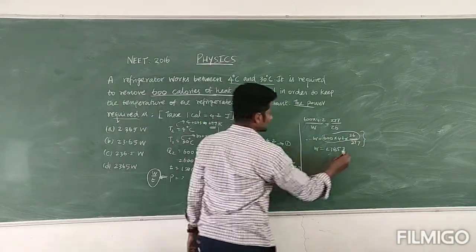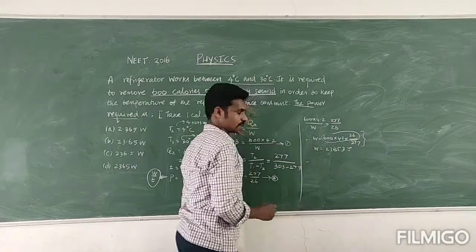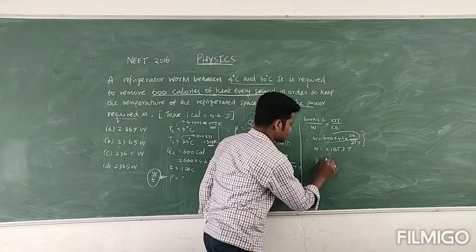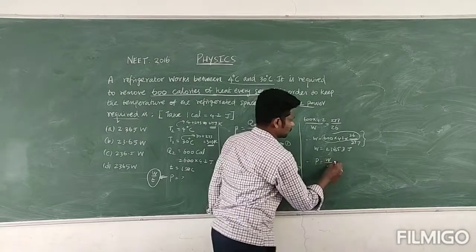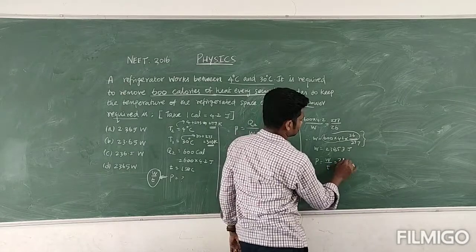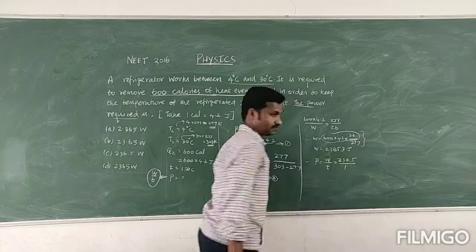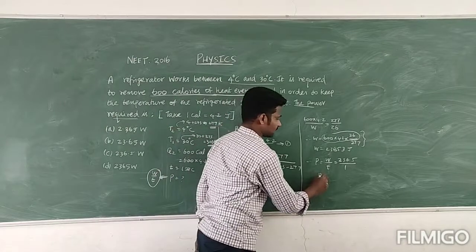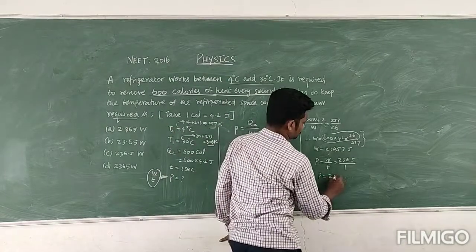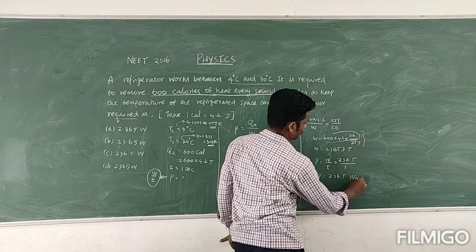But now they are asking the power. So power value we can write, that is work done divided by time. So 236.53 then divided by the time, which is you know for every second, so the time taken as 1 second. So the power is equal to 236.5 watt.